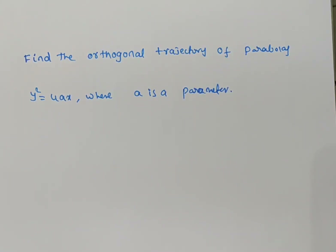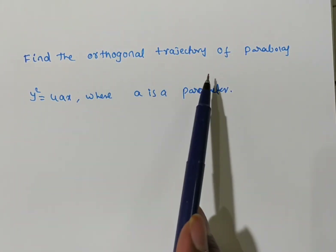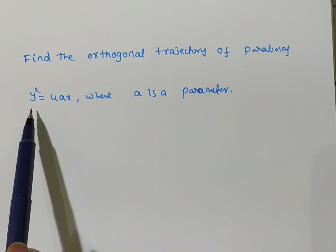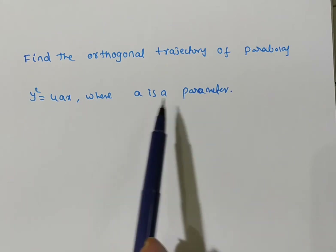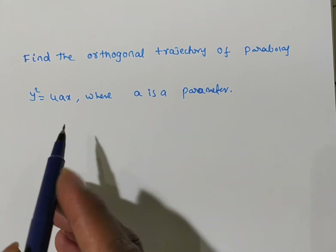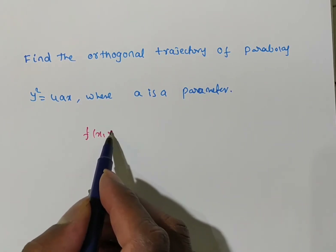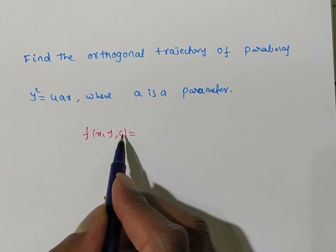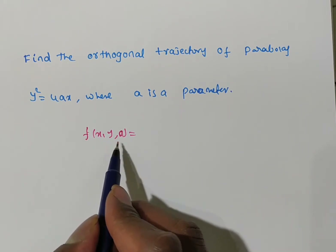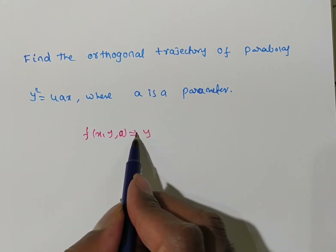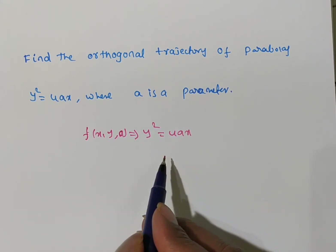The given problem is to find the orthogonal trajectory of the family of parabolas y² = 4ax, where a is a parameter. The given family is f(x, y, a) = 0, i.e., y² = 4ax, which is expressed in Cartesian coordinates.